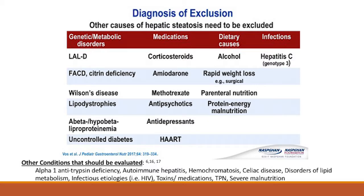Other conditions that should be considered include genetic and metabolic conditions, infections like hepatitis C, certain medications, TPN, rapid protein-energy weight loss, alpha-1 antitrypsin deficiency, and autoimmune hepatitis. There are so many other conditions that can present as fatty liver, so a thorough workup is important.